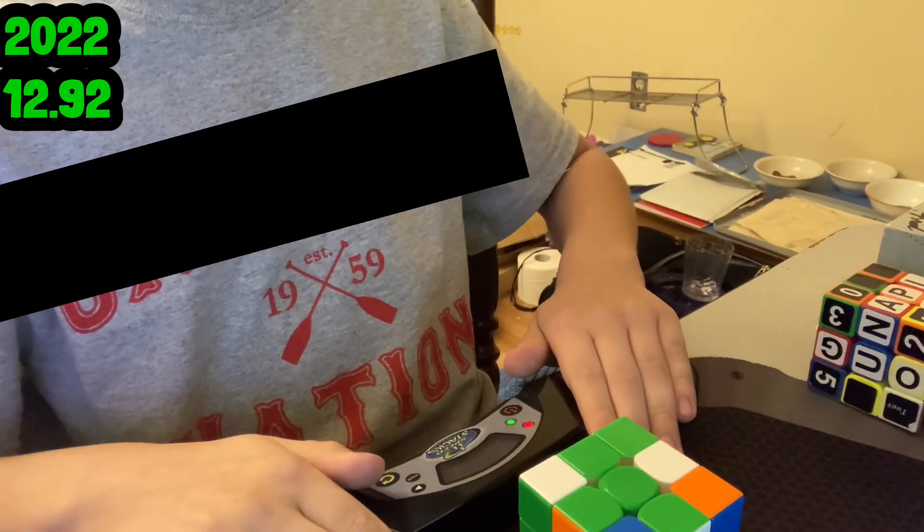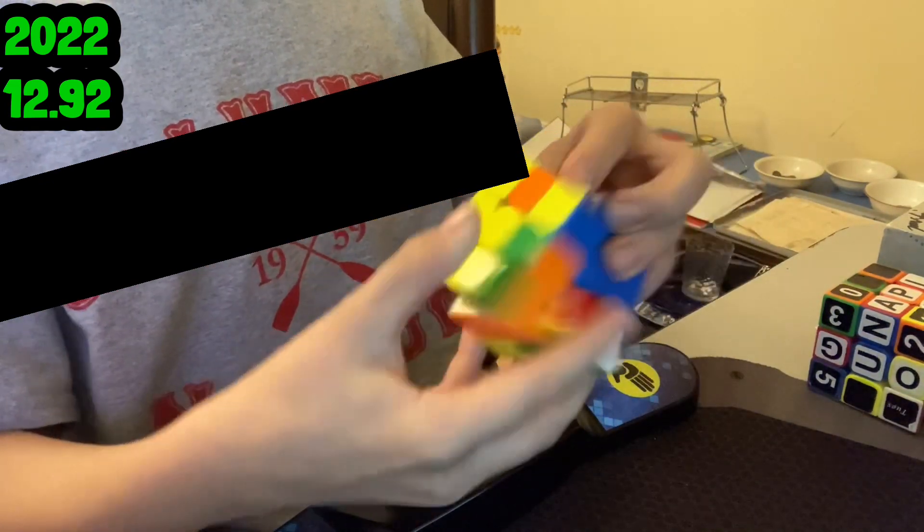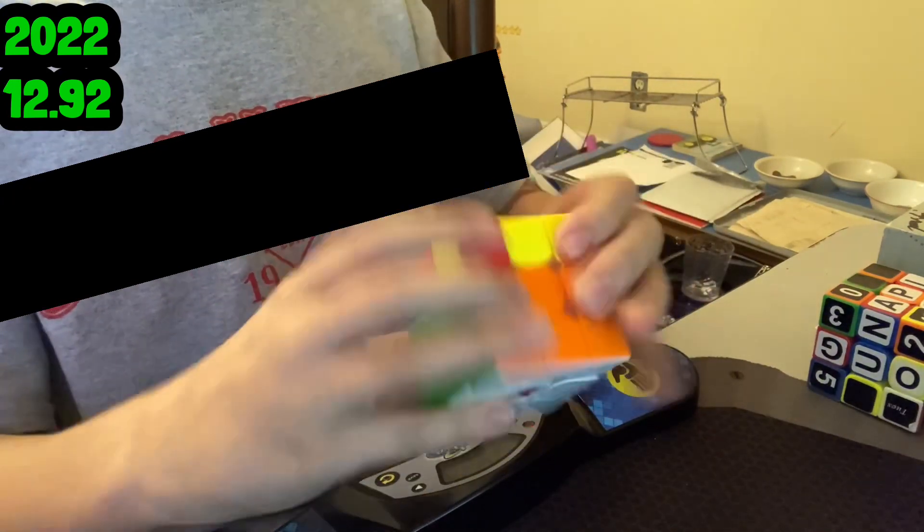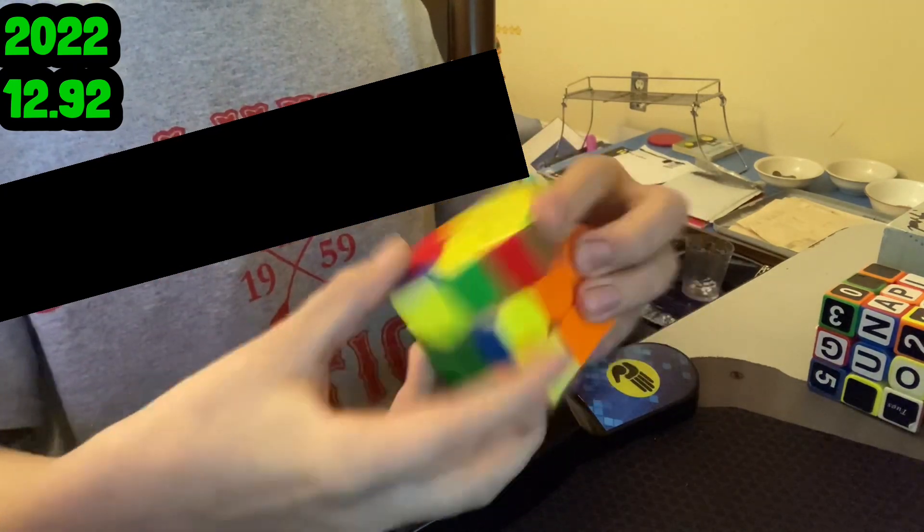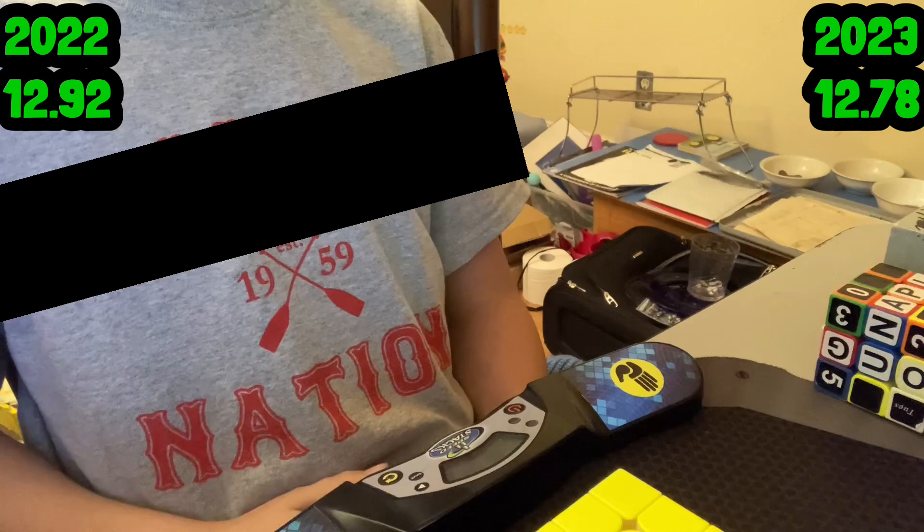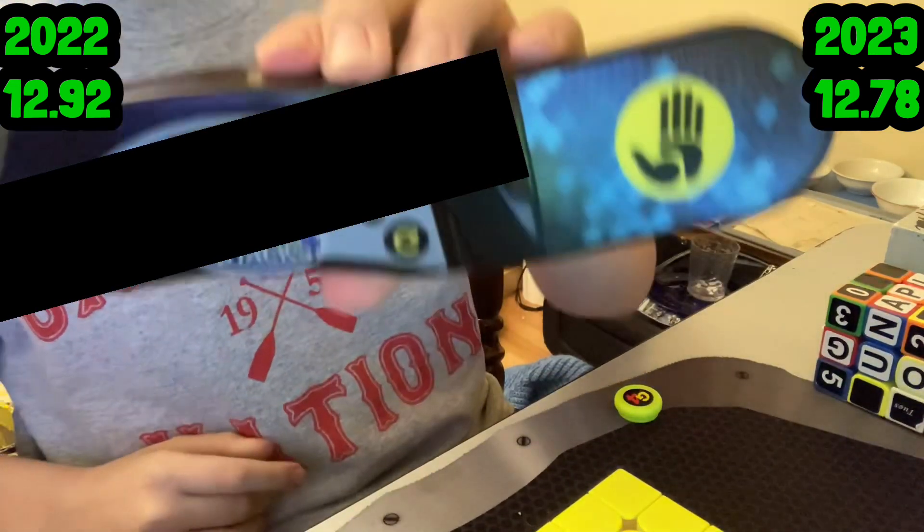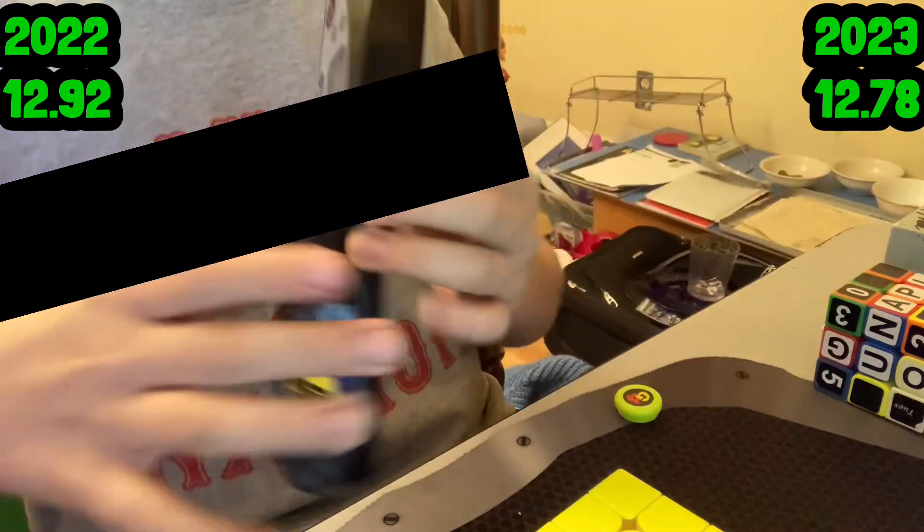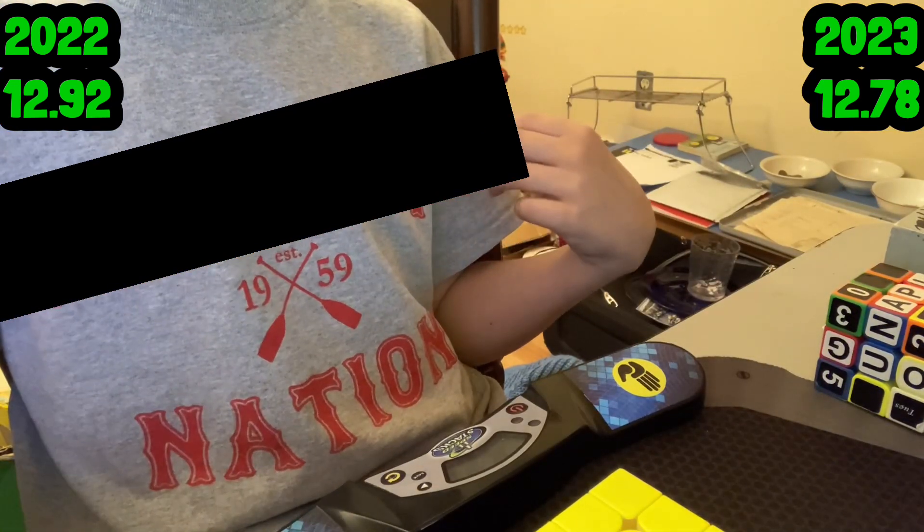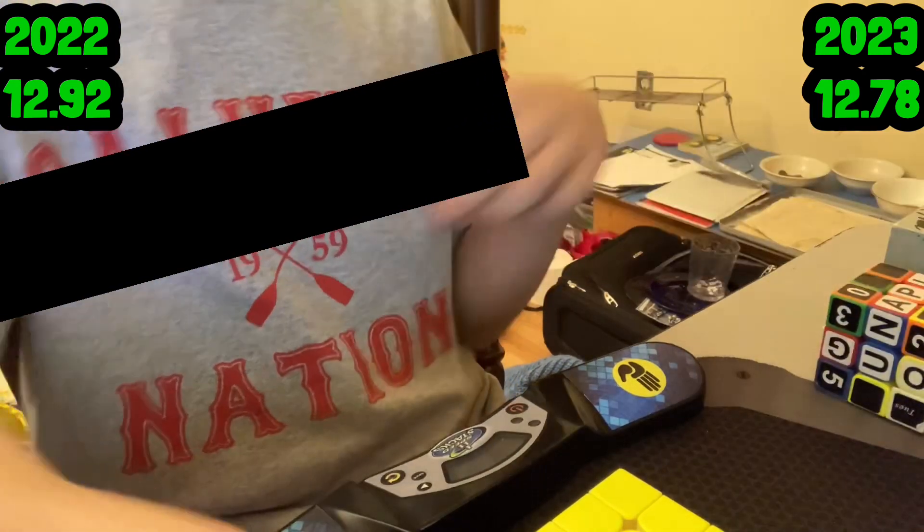Three, two, one, go. Okay, I got a 12.787 right here. So, my last solve of 2022 and my first solve of 2023 were both 12. So, that's pretty nice. That is pretty average for me.